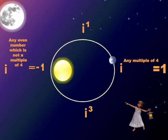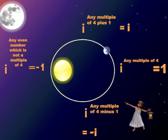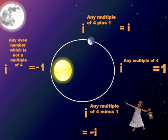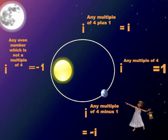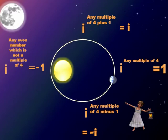On the final slide: i raised to any multiple of 4 equals 1. Now, i raised to any multiple of 4 plus 1 — for example i raised to 5 (which is 4+1) — equals i. This applies to any multiple of 4 plus 1, so i raised to 17 (16+1) also equals i, and i raised to 401 (400+1) also equals i.